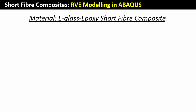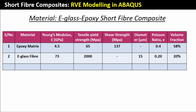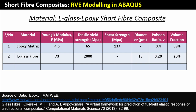The material we'll be using is an E-glass fiber system with an epoxy matrix. These are the properties of the composite, the matrix, and the E-glass fiber that we'll be using. In particular, note the tensile yield and shear strength, as these are important when modeling the short fiber response. I've taken the epoxy properties from Matweb, a useful commercial website for material properties, and the E-glass fiber properties from a previous publication of mine.